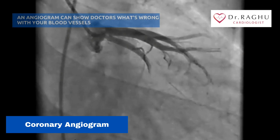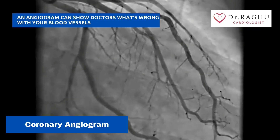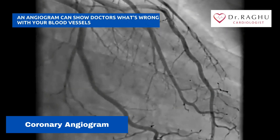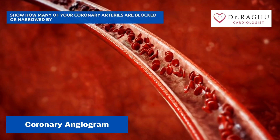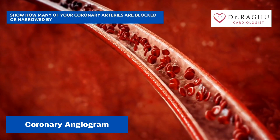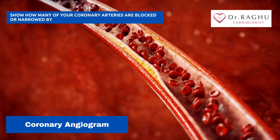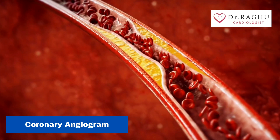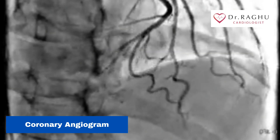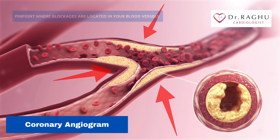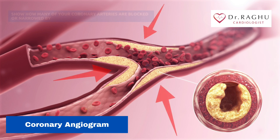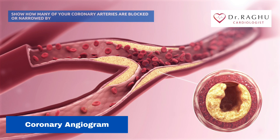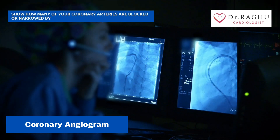An angiogram can show doctors what's wrong with your blood vessels. It can show how many of your coronary arteries are blocked or narrowed by fatty plaques, and pinpoint where blockages are located in your blood vessels. It also shows how much blood flow is blocked through your blood vessels.